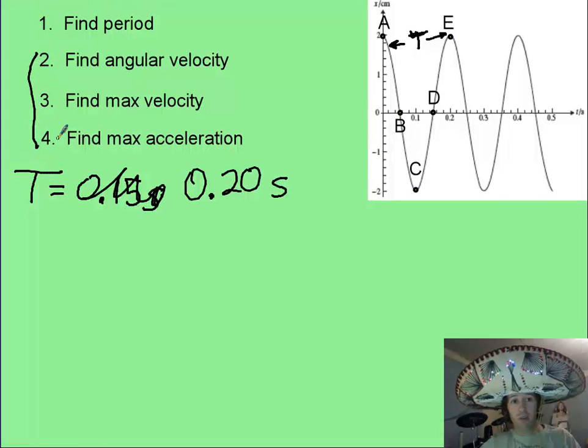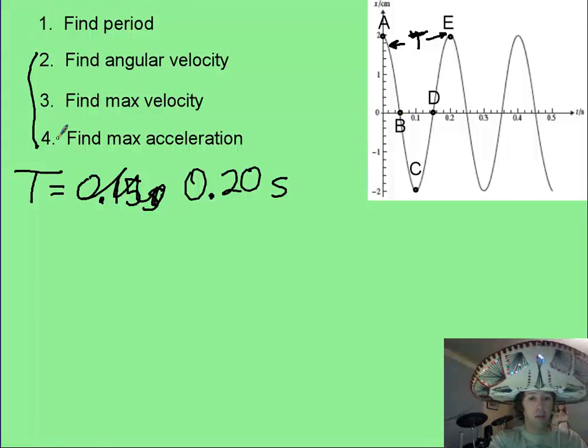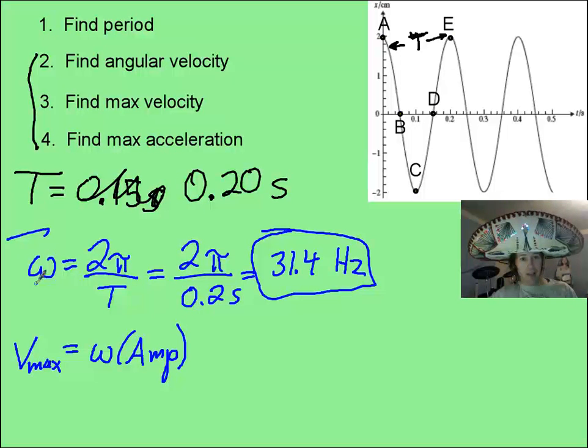Now with that, hopefully these other things will start to flow like milk and honey. Once you know period, angular velocity is just plugging and chugging. Take your 2π over T, and I plugged in my time of 0.2 seconds, and I got a 31.4 hertz as my angular velocity.